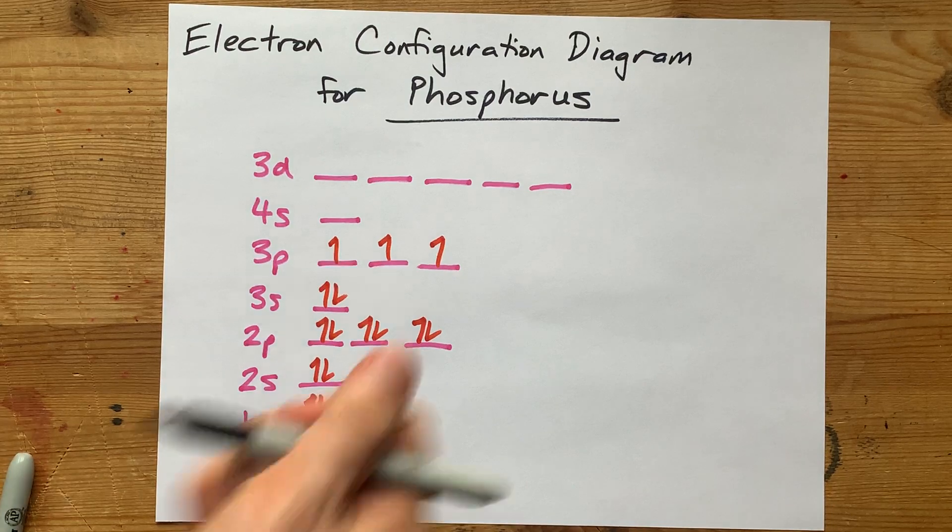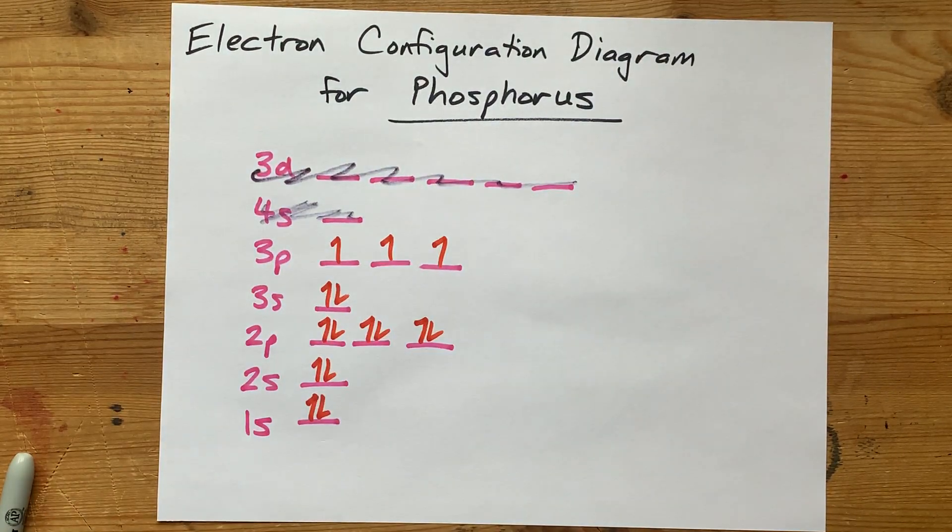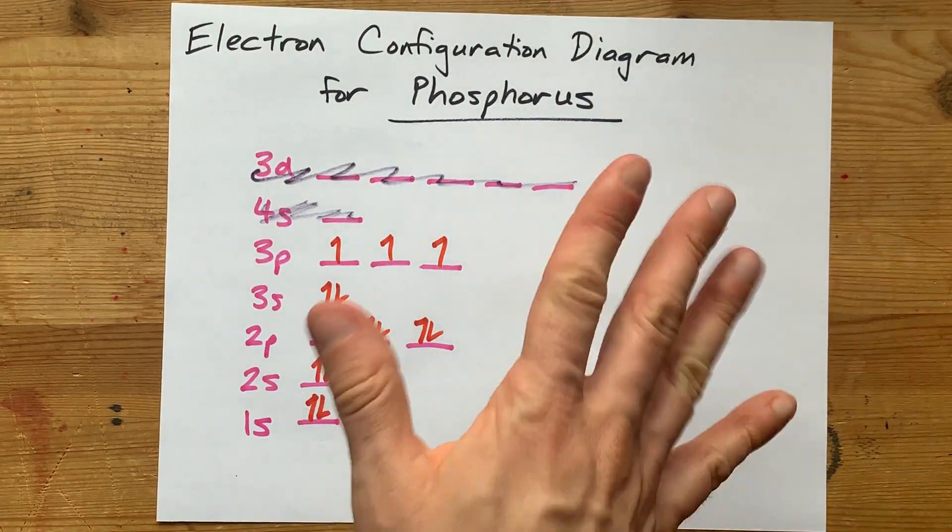I basically didn't need to include that 3d stuff or that 4s stuff, but hey, that's why I work in pencil when I'm doing things in real life. Here's your electron configuration diagram for phosphorus. You're welcome.